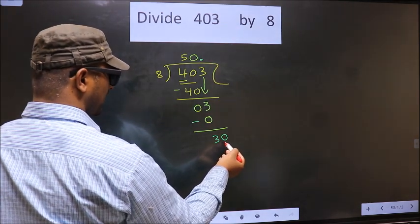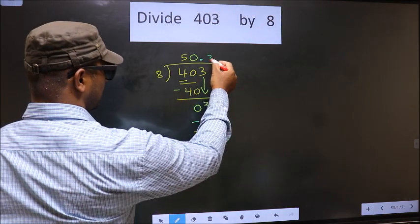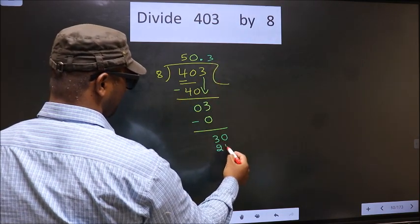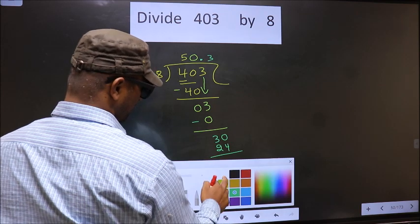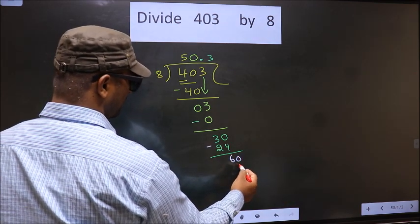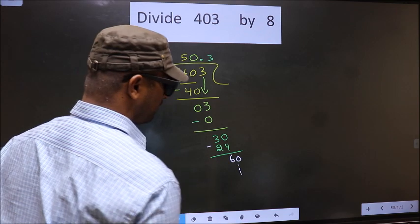Here 30. A number close to 30 in 8 table is 8 times 3 is 24. Now you subtract, you get 6, take zero, take zero, continue the division. I am not doing that.